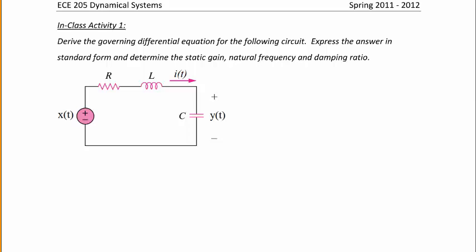Since we have a series RLC circuit, which is essentially a loop, we're going to use KVL to solve. KVL is Kirchhoff's Voltage Law, which states that the sum of the voltages around the loop is equal to zero. Making rises negative and drops positive, we have the voltage across R plus the voltage across L plus the voltage across C equals x of t, the input.